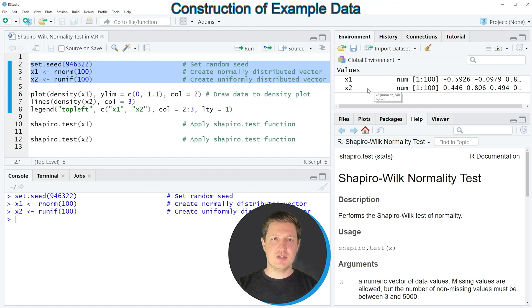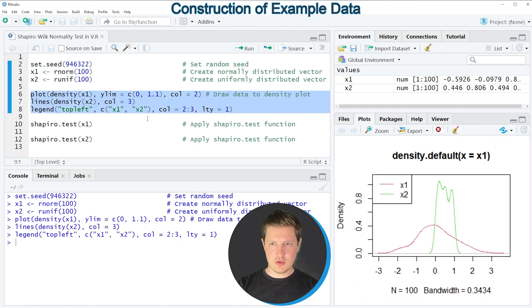In the first step of this video I'm going to draw these data to a density plot to show the basic structure of our data, and we can do that by running lines 6 to 8 of the code. If you run these lines of code you can see that at the bottom right of RStudio a new density plot has been created.